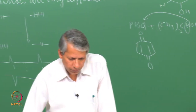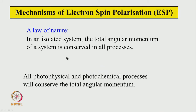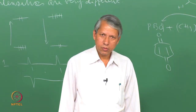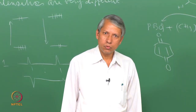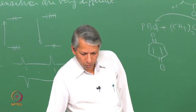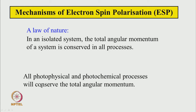We accept as a fundamental law of nature: in an isolated system the total angular momentum is conserved in all processes. There cannot be any creation or destruction of angular momentum out of nowhere. Therefore all photophysical and photochemical processes must conserve the total angular momentum.